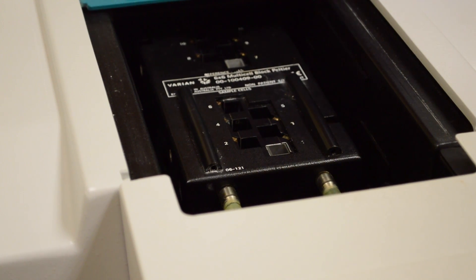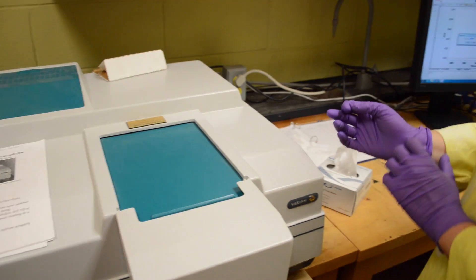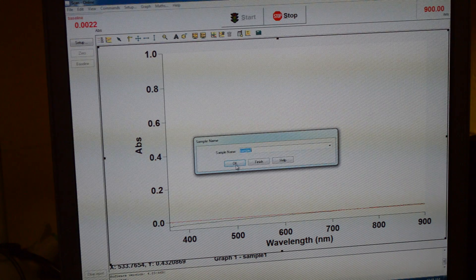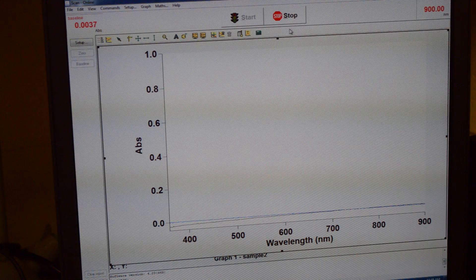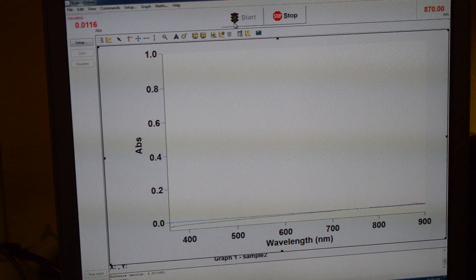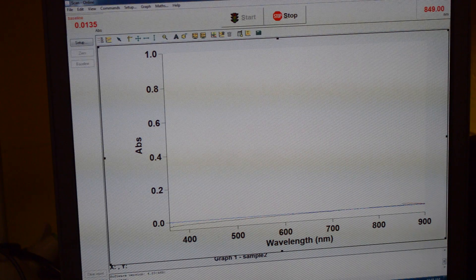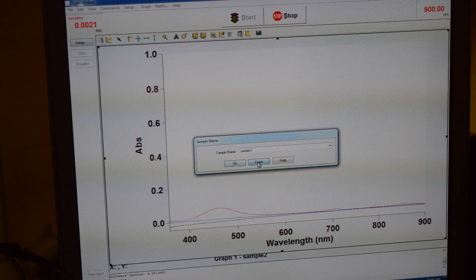From there, you're closing the lid and you will go back to the computer to press start. This is sample two, so we are going to press OK. Once the green light shows on the start button, we are going to press start to retrieve the next sample. When the sample is finished collecting, you're going to press the finish button.